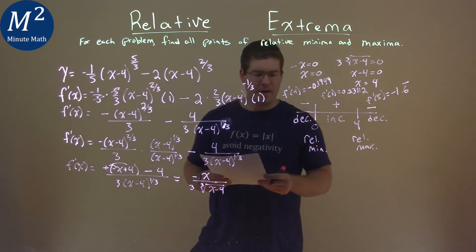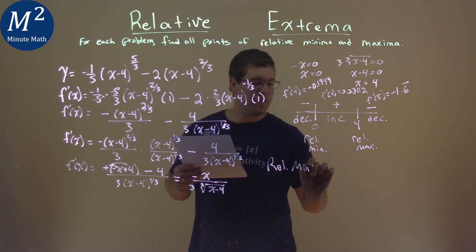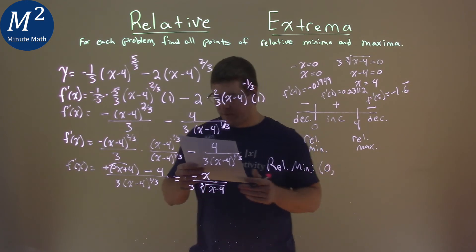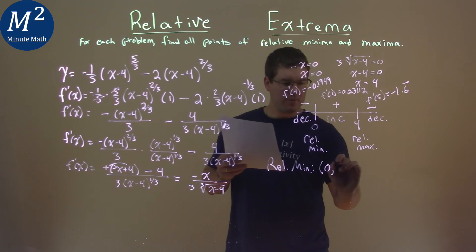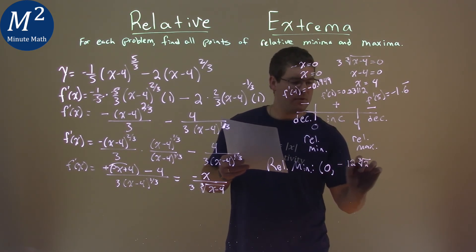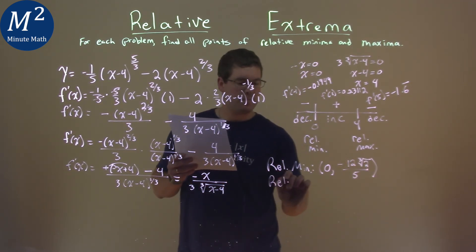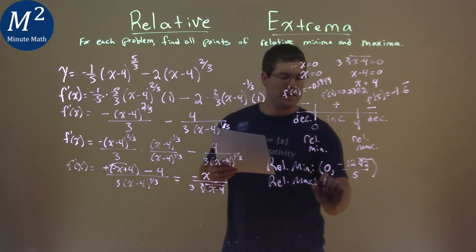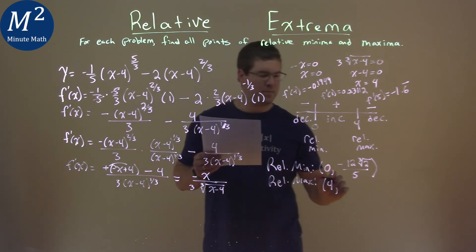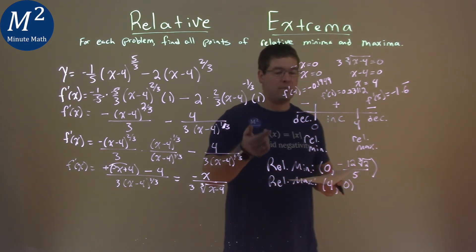Okay? So, now we want to label it here. We have a relative minimum. We want to find the coordinate point where that happens. Our x value is zero, and we plug zero into our original function. It's kind of tricky, but it comes out to be the y value of negative 12 third root of 2 over 5. And the relative max value, or maximum, 4 goes into our original function, and the output comes out to just be zero. And so, these are coordinate points there for the relative min and max.